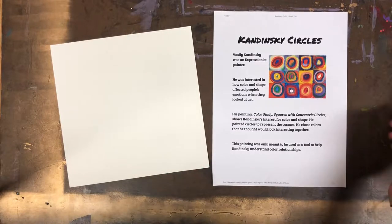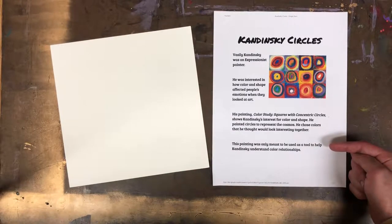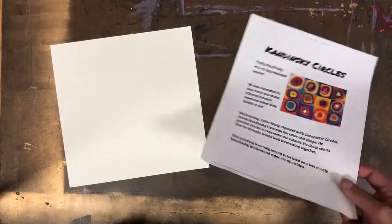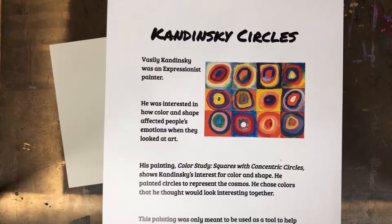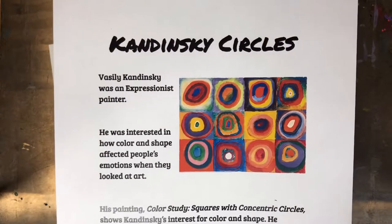He painted circles to represent the cosmos. He chose colors that he thought would look interesting together. This painting was only meant to be used as a tool to help Kandinsky understand color relationships.